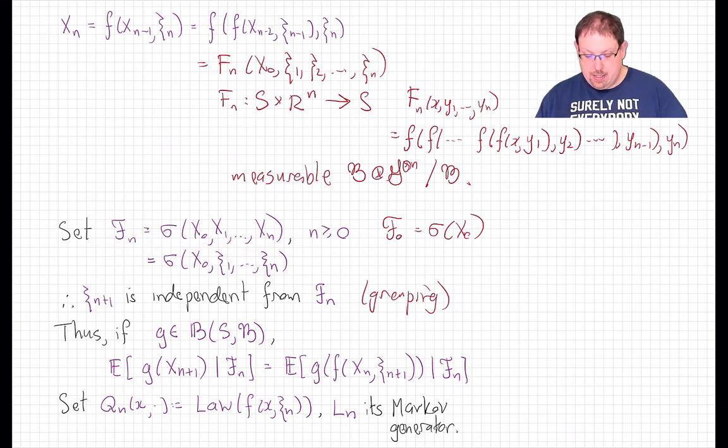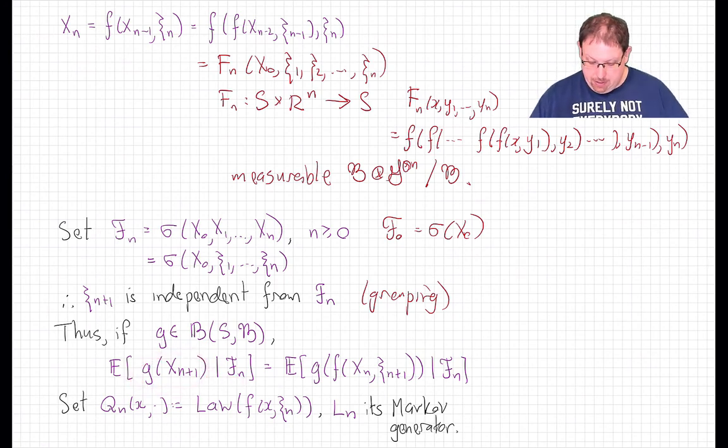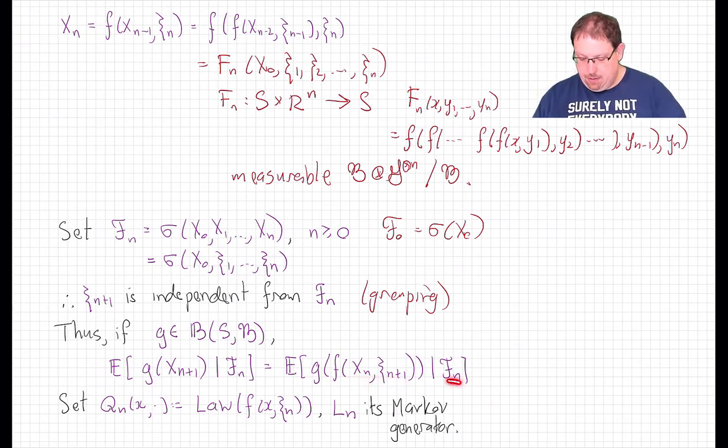So what happens if we condition on this sigma field? That is, we condition on the random variables X0 up to X_n. Condition what? Well, let's take an arbitrary bounded function of our point X_{n+1} after n+1 steps of evolution. g(X_{n+1}) conditioned on F_n. Well, X_{n+1} is just little f(X_n, ξ_{n+1}). And so we're conditioning this function, g composed with f, of these two variables, X_n and ξ_{n+1}, on F_n.